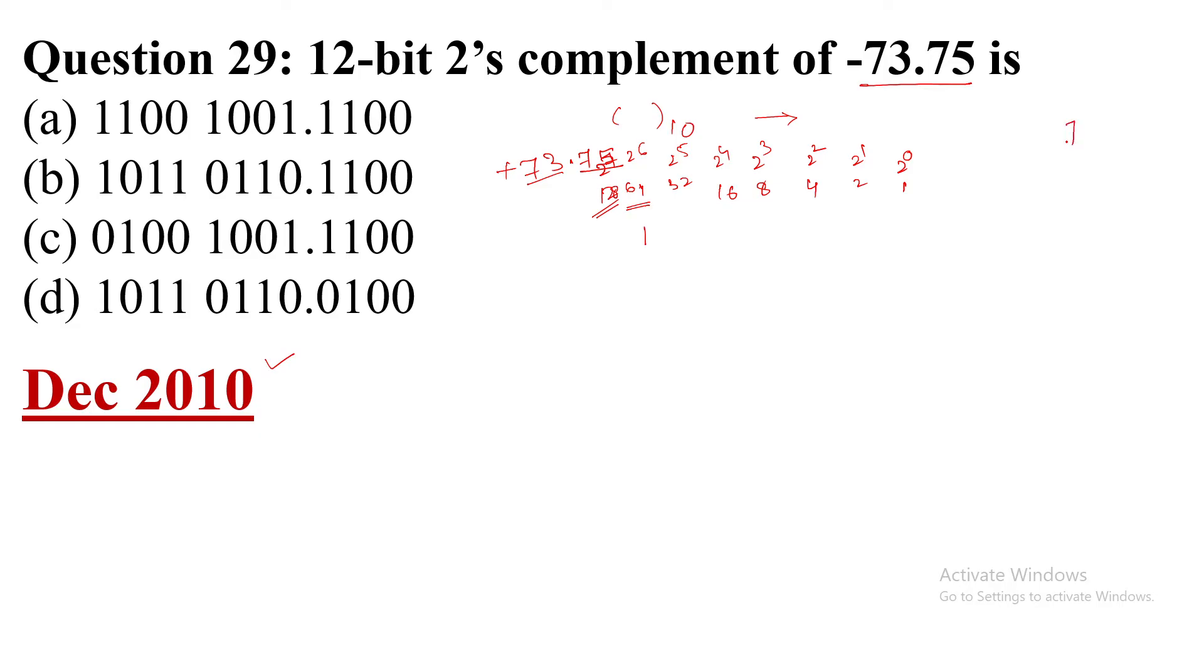So what we will use from this? 64. So at the 64 place write 1. 73 minus 64, then 13 minus 4 is 9. So 9 is 8 plus 1. At these two places put 1, and then 0, 0.